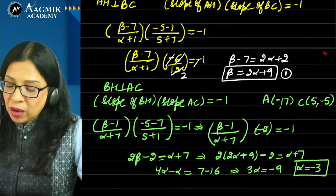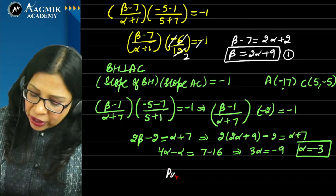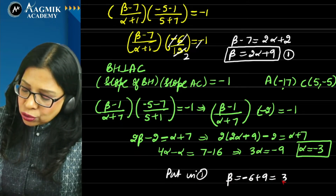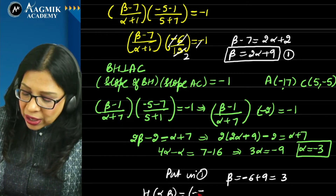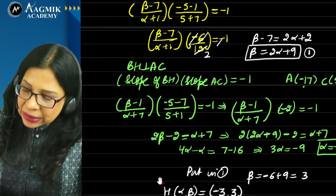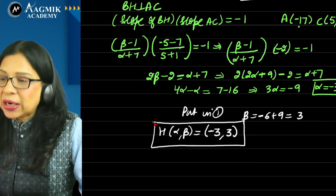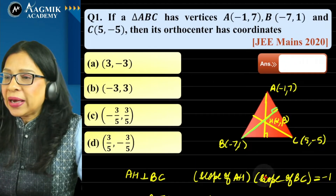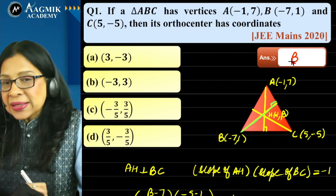Substituting α = −3 into equation (1): β = 2(−3) + 9 = 3. Therefore, the orthocenter H is (−3, 3). Checking the options, this is option B. So B option is correct.